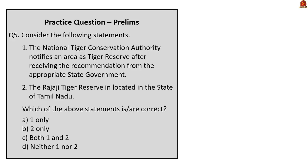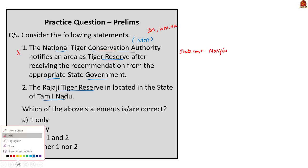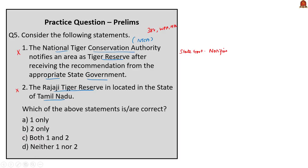Question 5: Consider the following statements. Statement 1: The National Tiger Conservation Authority notifies an area as a tiger reserve after receiving the recommendation from the appropriate state government — incorrect. According to Section 38V of the Wildlife Protection Act of 1972, it is the state government that shall, on the recommendations of the Tiger Conservation Authority, notify an area as a tiger reserve. Statement 2: The Rajaji Tiger Reserve is located in the state of Tamil Nadu — wrong; it is in Uttarakhand. There are four tiger reserves in Tamil Nadu: Kalakad Mundanthurai, Mudumalai, Sathyamangalam and Anamalai Tiger Reserves. The correct answer is option D: neither 1 nor 2.